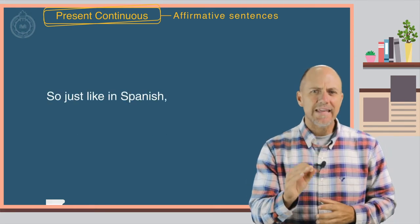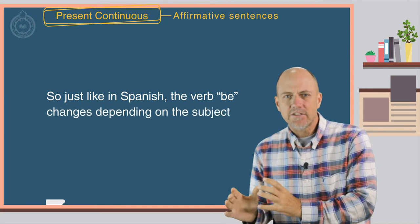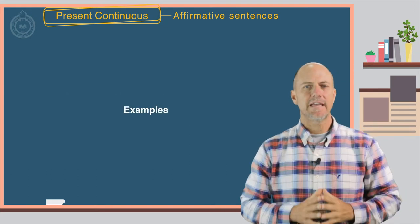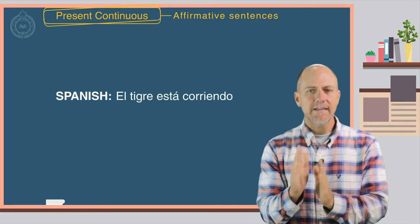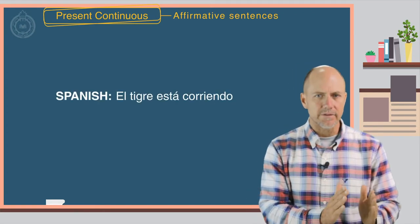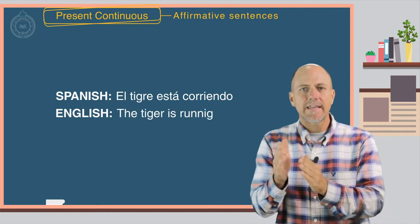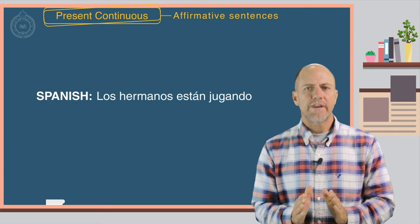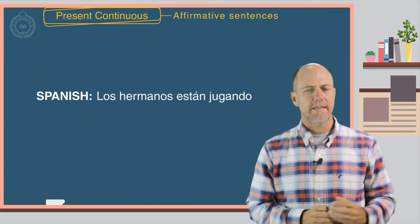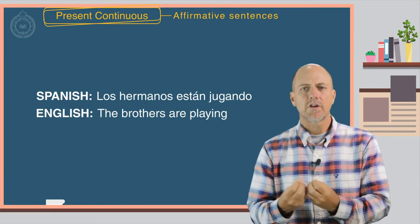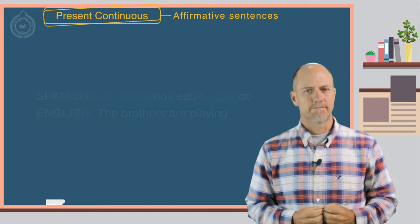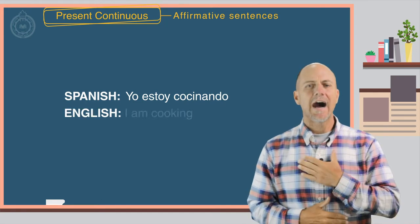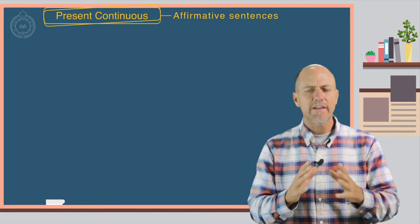So just like in Spanish, the verb be changes depending on the subject. Here are some examples. Spanish, el tigre está corriendo. English, the tiger is running. Spanish, los hermanos están jugando. English, the brothers are playing. Spanish, yo estoy cocinando. English, I am cooking. Very good.